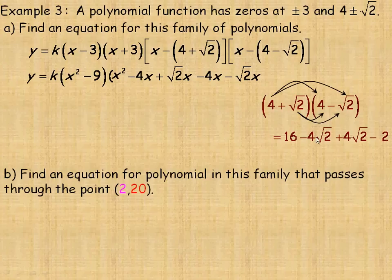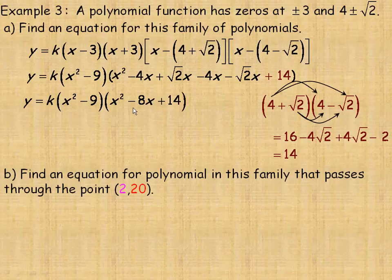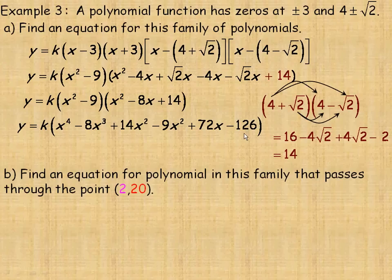Notice the root 2x and negative root 2x add to 0, so the second bracket simplifies to x squared minus 8x plus 14. Now multiplying the two brackets: x squared times x squared is x to the 4th; x squared times negative 8x is minus 8x cubed; x squared times 14 is plus 14x squared; negative 9 times x squared is minus 9x squared; negative 9 times negative 8x is plus 72x; and negative 9 times 14 is minus 126. Combining like terms, 14x squared minus 9x squared equals 5x squared. That's the general equation for this quartic family of polynomials.